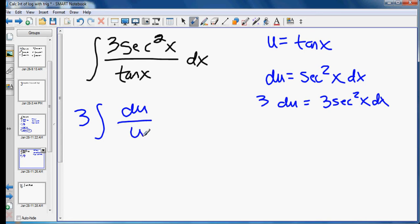But I pull the 3 out front and that gives me du over u. Once we're in the form du over u, we have to remember the rule for that is the natural log of the absolute value of u plus c. So our final answer is 3 times the natural log of the absolute value of tangent x plus c.